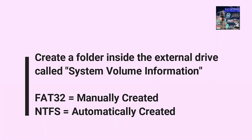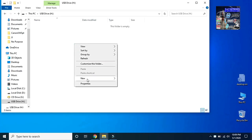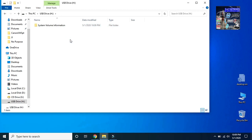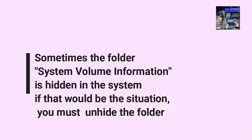Create a folder inside the external drive called 'system volume information'. For FAT32, this must be created manually. In the NTFS file system, it is automatically created. Sometimes the folder 'system volume information' is hidden in the system — if that is the case, you must unhide the folder.